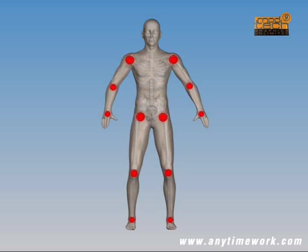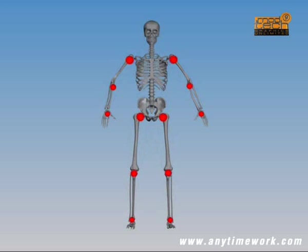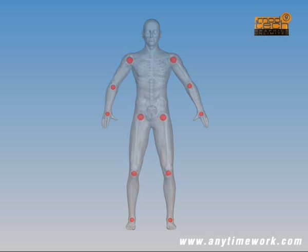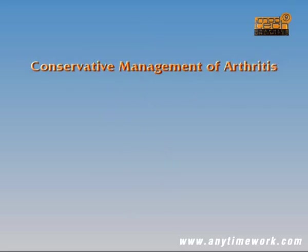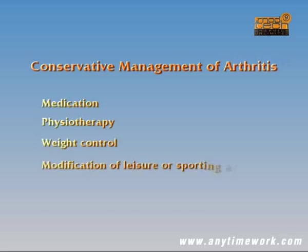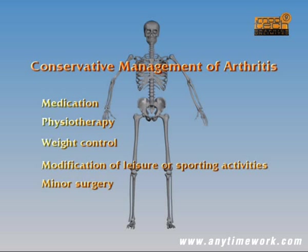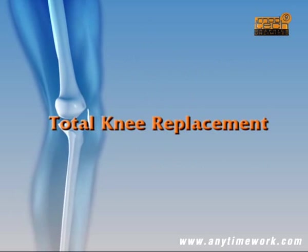All such joints may be affected by rheumatoid arthritis, and both sides of the body are affected equally. Whatever the type of arthritis, some cases can be successfully managed by conservative means, such as medication, physiotherapy, weight control, or modification of leisure or sporting activities that aggravate the problem. Others may require minor surgery to remove diseased tissue or loose fragments of bone or cartilage to slow down the damaging process, or to structurally realign the joint to reduce abnormal stress.